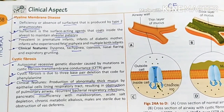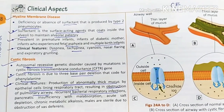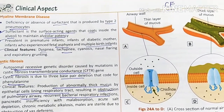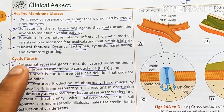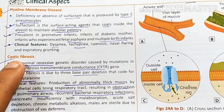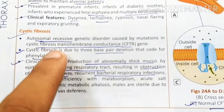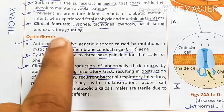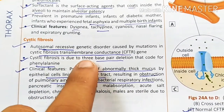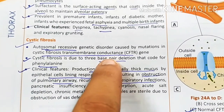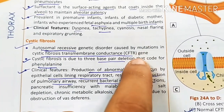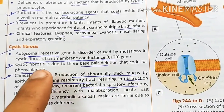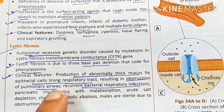Hello everyone, I am Shahan Layak and we are discussing the clinical anatomy series. Today we will discuss cystic fibrosis. Cystic fibrosis is an autosomal recessive disorder. Remember the CFTR gene — the cystic fibrosis transmembrane conductance regulator gene.